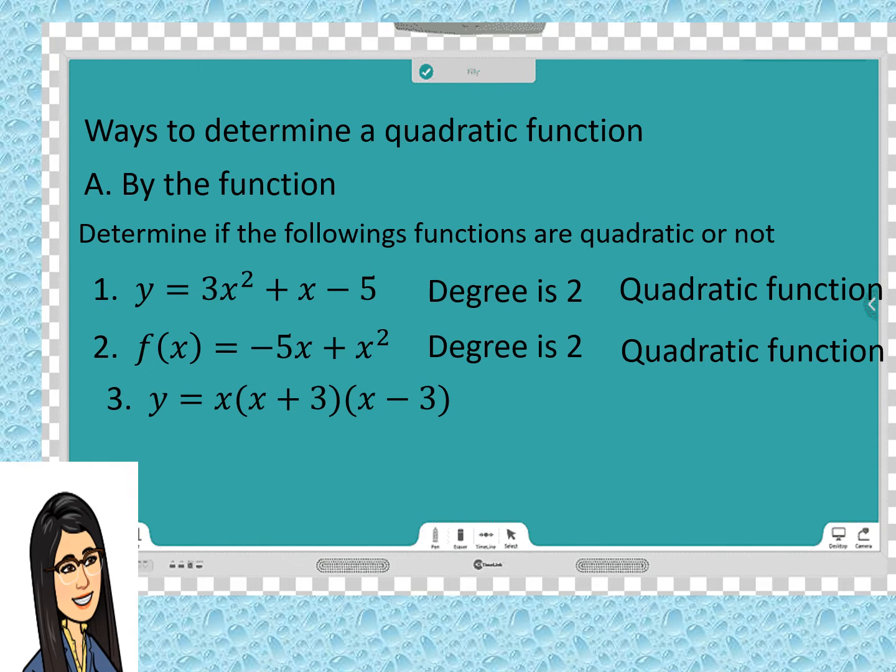Look at x times the quantity of (x + 3) times the quantity of (x - 3). It looks like a linear function. But if the function is simplified, it would be y = x³ - 9x. Since the highest degree is 3, then we can say this is not a quadratic function.